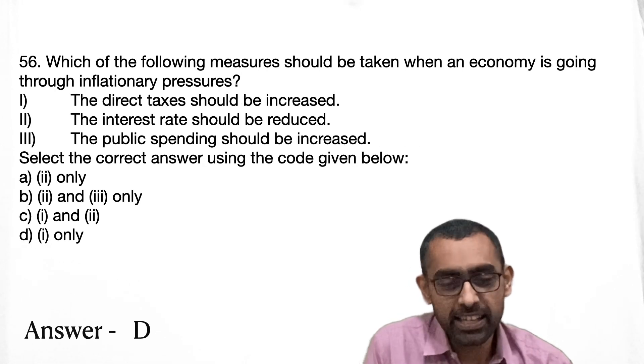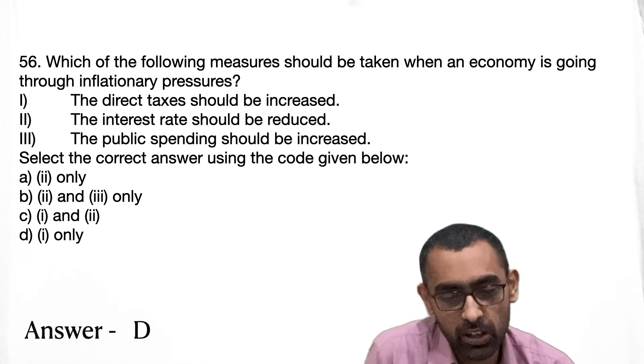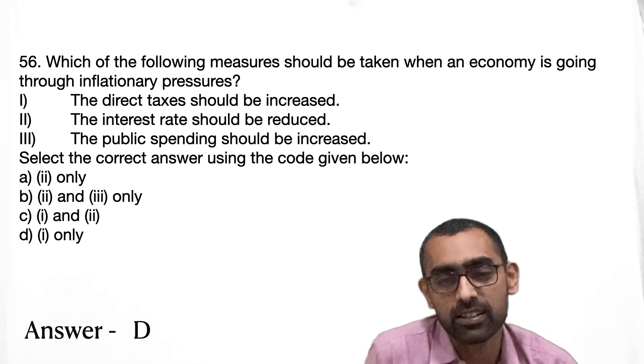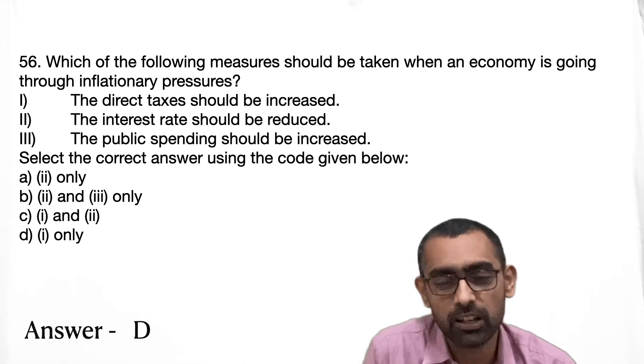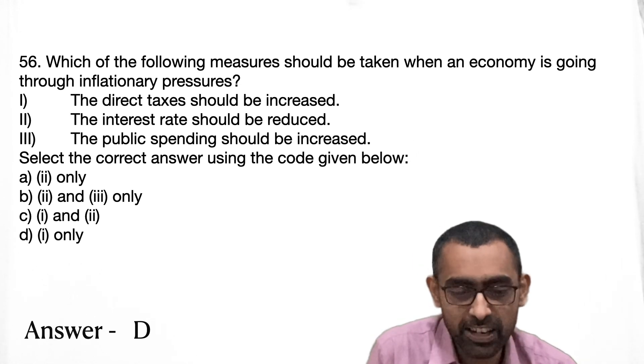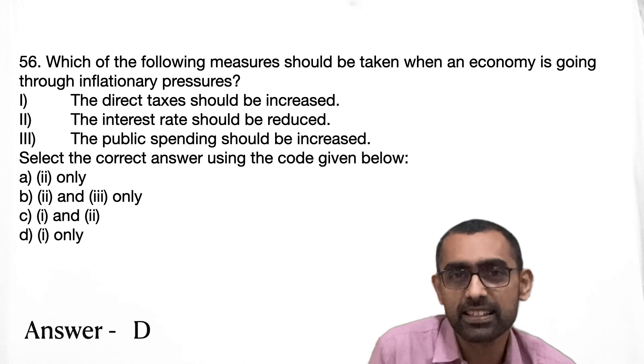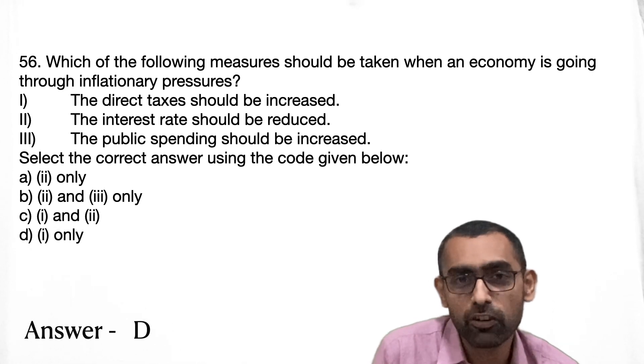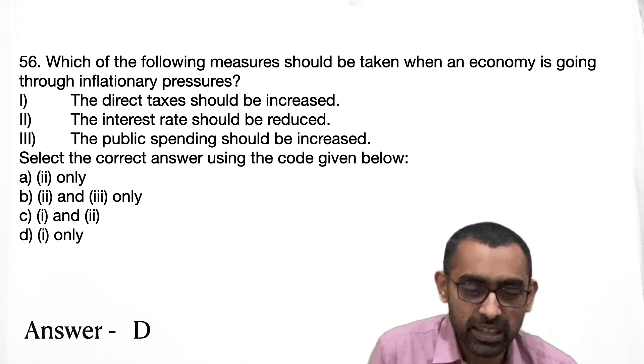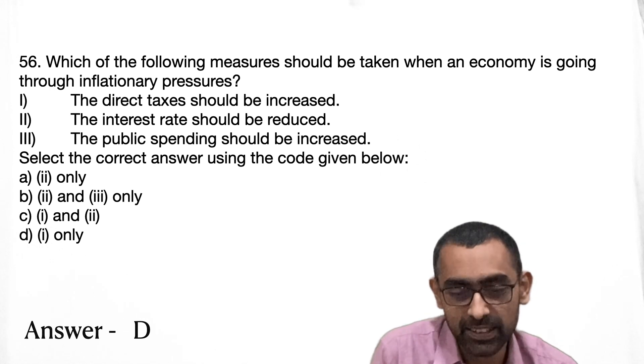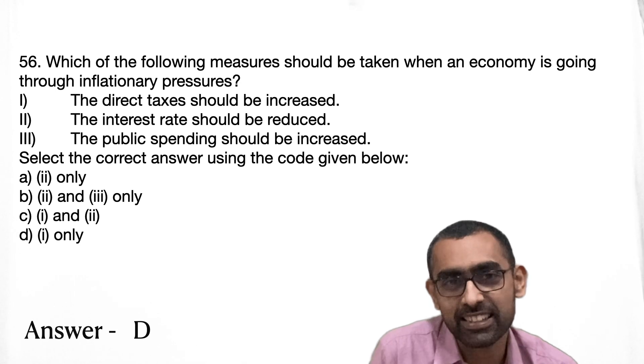Next question number 56 is about basically when an economy is going through inflationary pressures. Now here again, it's a very basic question of economics. I'm not going into the details, but just to give you a little understanding. So when inflation is happening, basically what's happening is there's a lot of money in the system. And so the value of money is coming down. So the purchasing power is coming down. So everything has become costly. So that happens when a lot of money is there in the system.